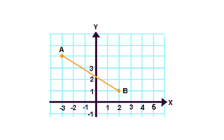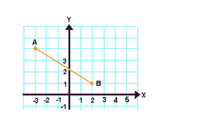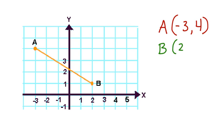Here's our line segment. The A coordinate is negative 3, 4. The B coordinate is 2, 1. Now we have an x1, y1 and an x2, y2 coordinate to substitute into the midpoint formula.